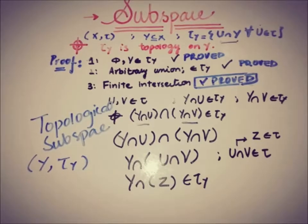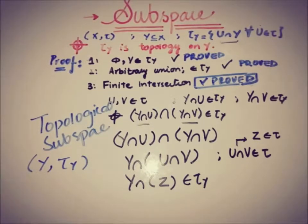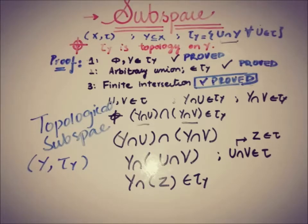Since all three axioms are satisfied, this implies that (Y, τ_Y) is a topological subspace. If you are looking for more such videos, you can subscribe to this channel to watch more upcoming videos. We will meet in the next video — till then, take care. Goodbye.